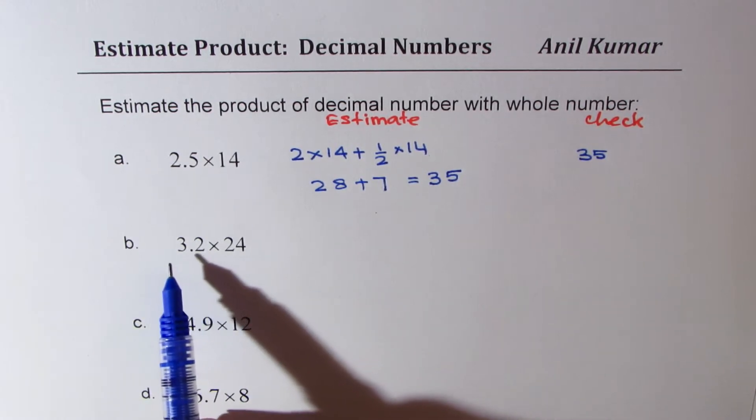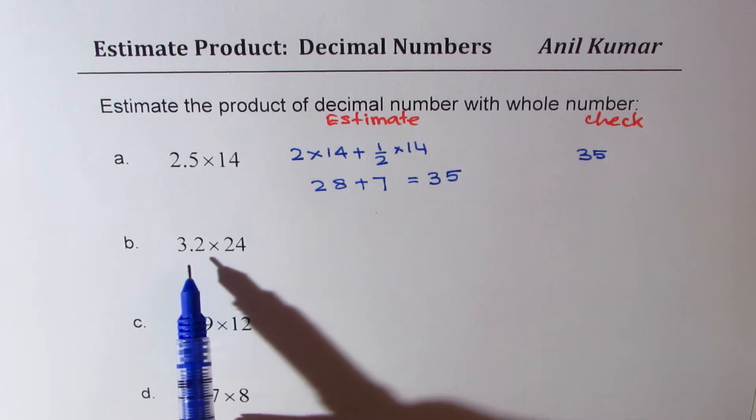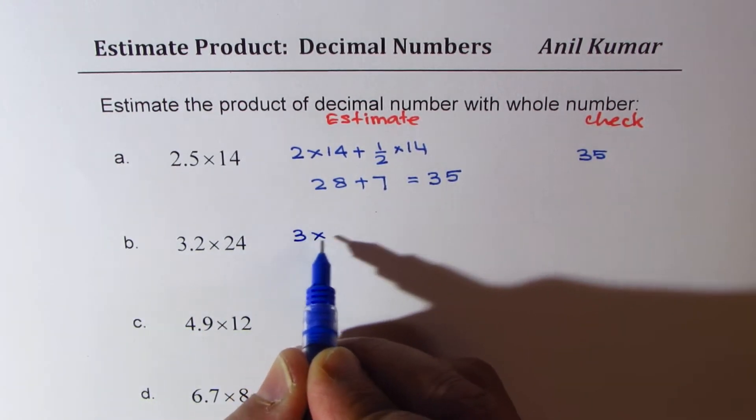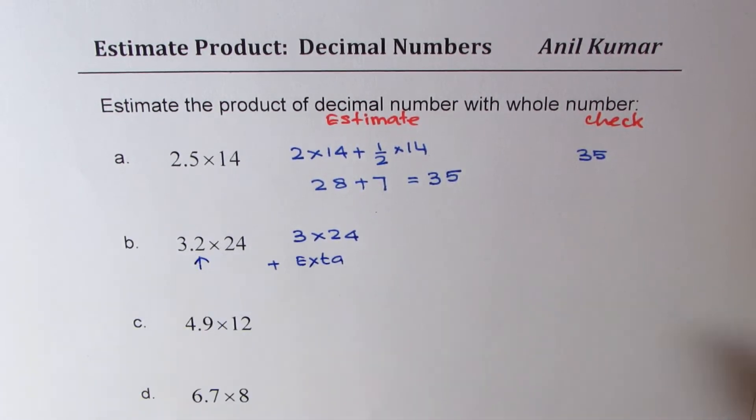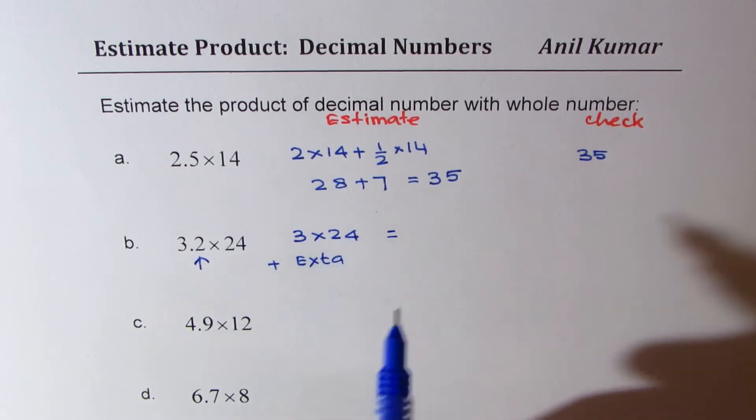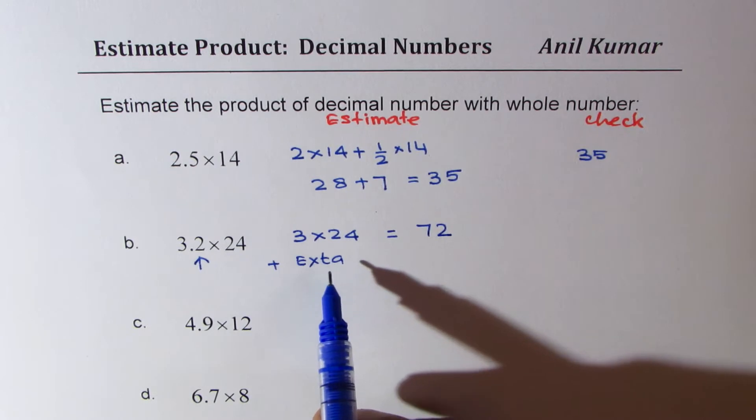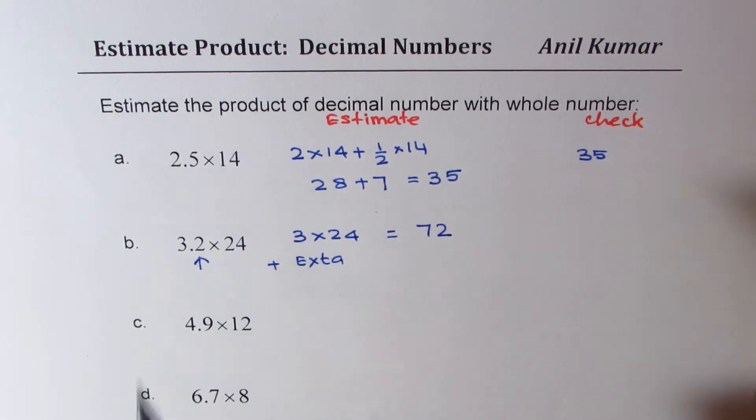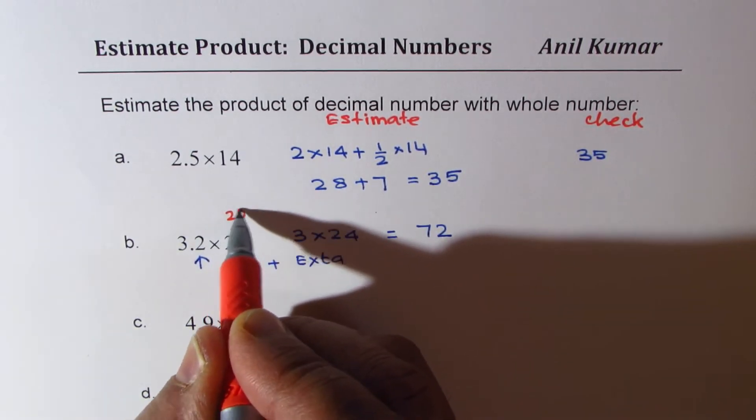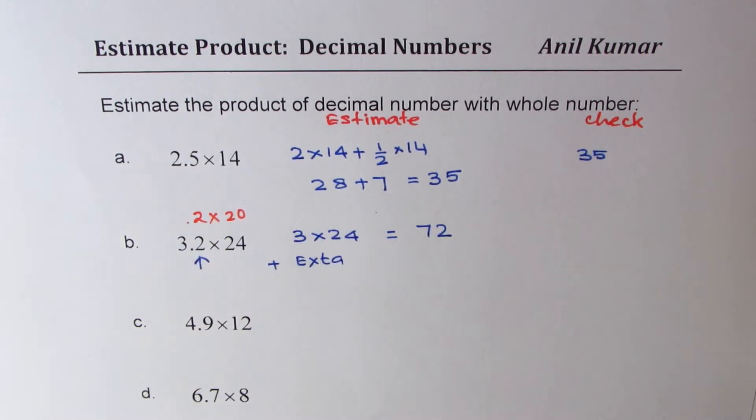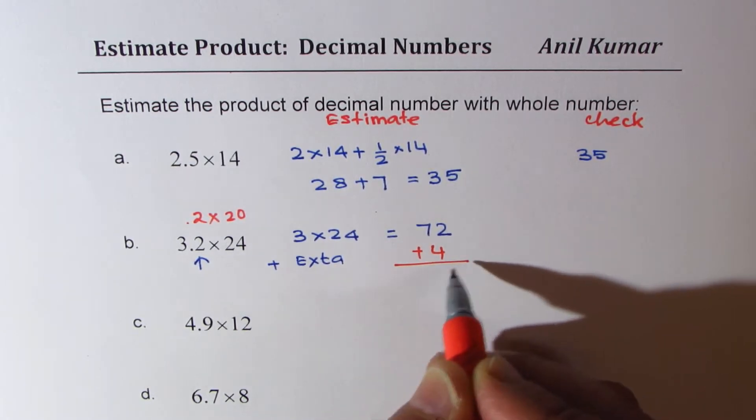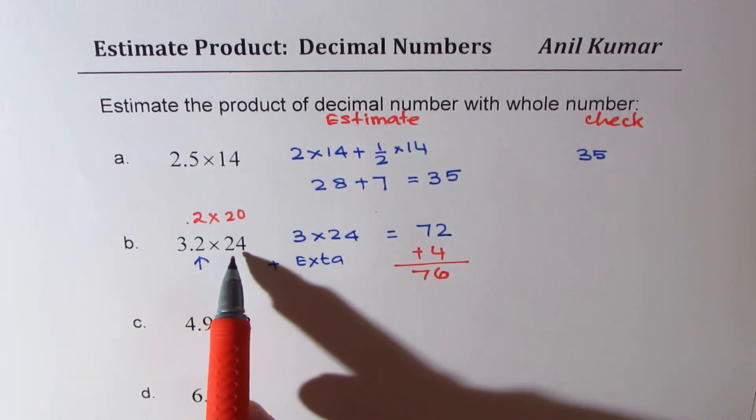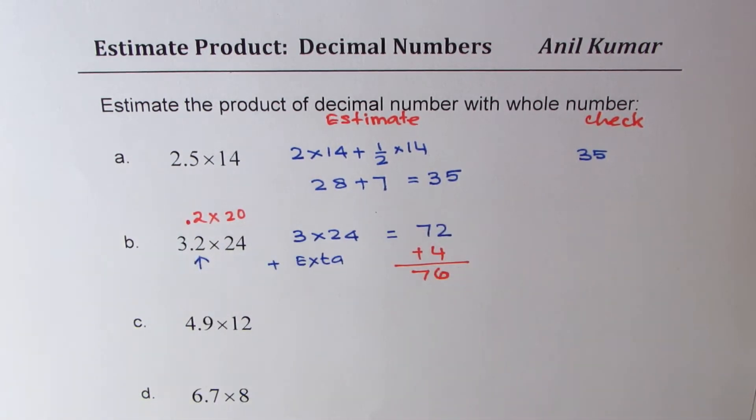Now let's look into the second example, which is 3.2 times 24. Now this really means it is 3 times 24 plus extra, which is smaller amount, just 0.2. So 3 times 24 is 72 plus something extra. So what you can do is that extra portion you can think about. This is like 20 times 0.2. Do you see that? So that gives you 4. So you could use 4 as extra value giving us a result of 76. Check the place value. So this is like 20 and this is decimal 2, so it is kind of adding 4.